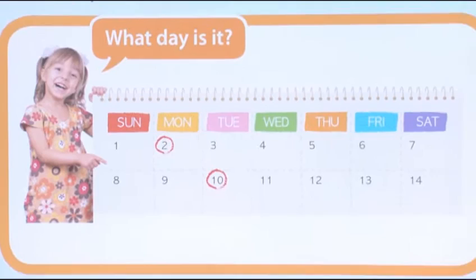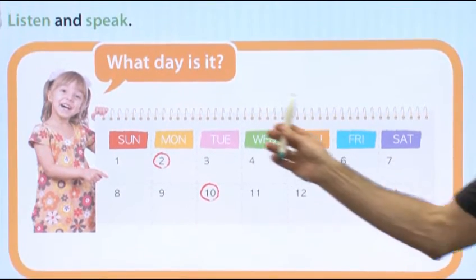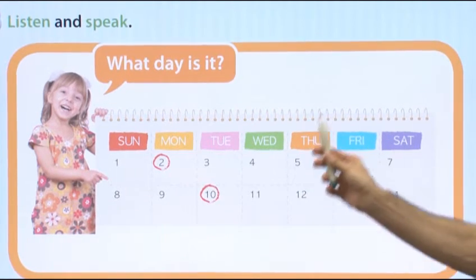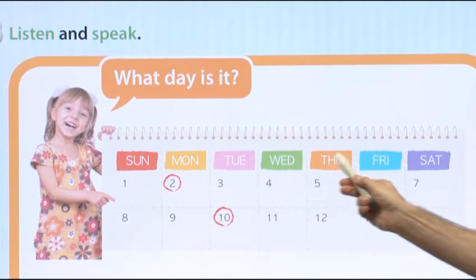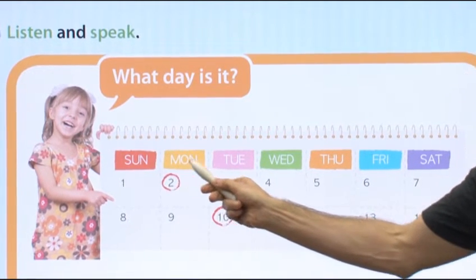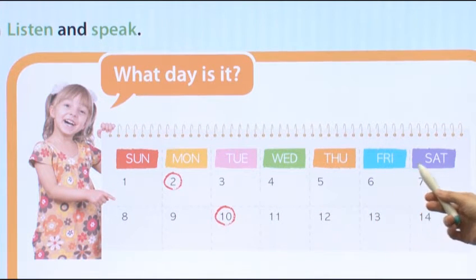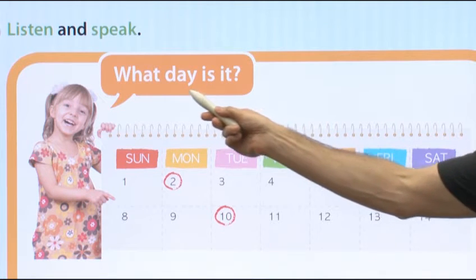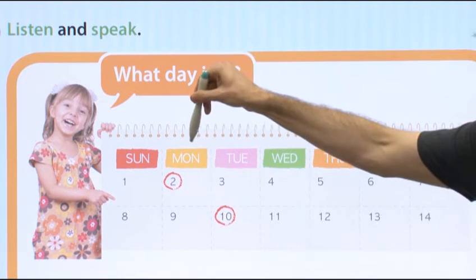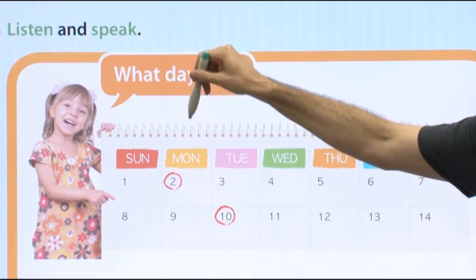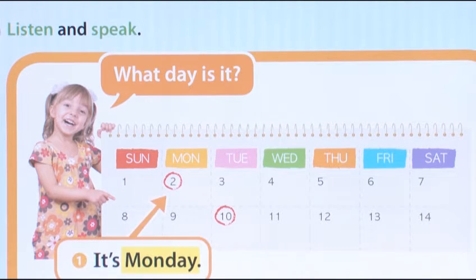Look at this — there's a girl. This is a calendar. It has many numbers and the days of the week: Sunday, Monday, Tuesday, Wednesday, Thursday, Friday, and Saturday. What day is it? She asks, what day is it? Can you remember? It's Monday.